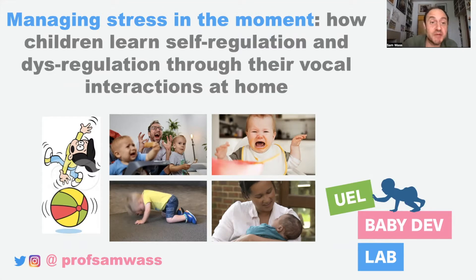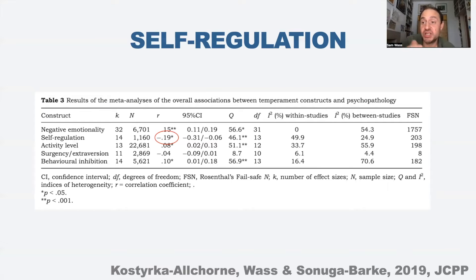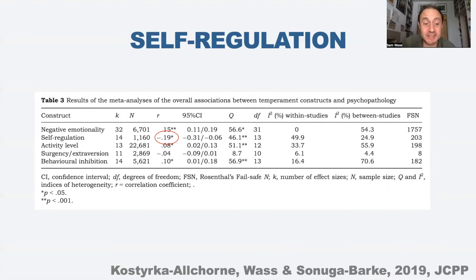This is a talk about managing stress in the moment - specifically how children use vocal behaviours for both self-regulation and dysregulation at home. Self-regulation is really important. Of all the things we measure during infancy and look at how predictive they are of long-term psychopathology - how likely a child is to have a mental health disorder during later life - self-regulation is actually the thing that comes out as most predictive.